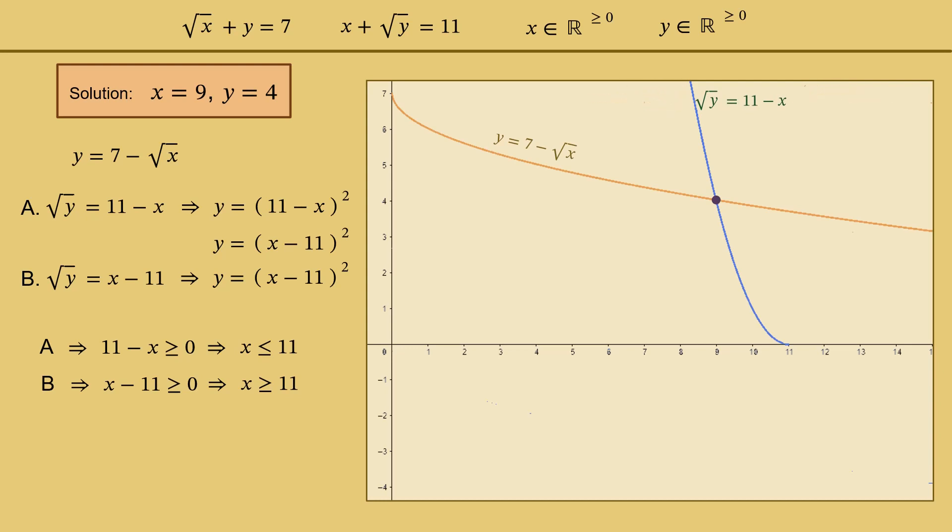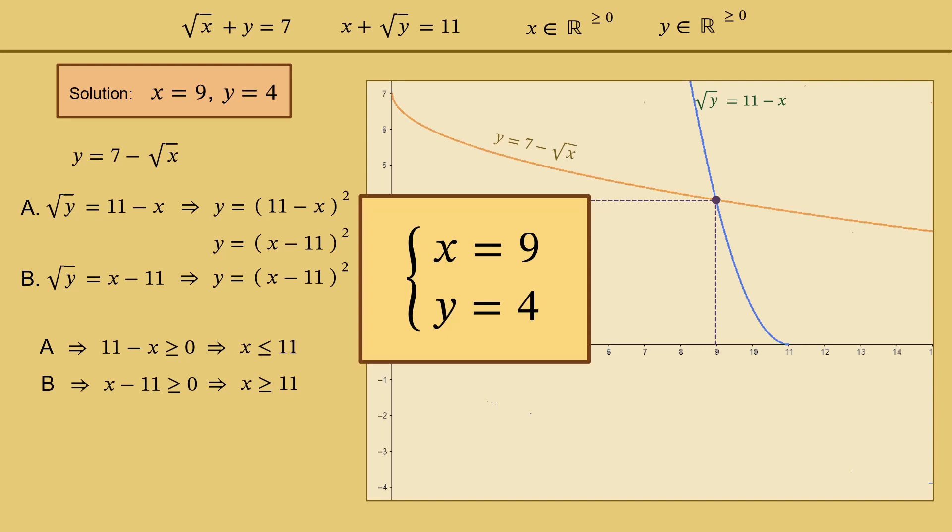Now the two graphs have only one common point, which means that the given system of equations has a single solution. And we know this solution. And we know even more. No other pair, even fractions, of x and y satisfies this system of simultaneous equations. And this is the end!